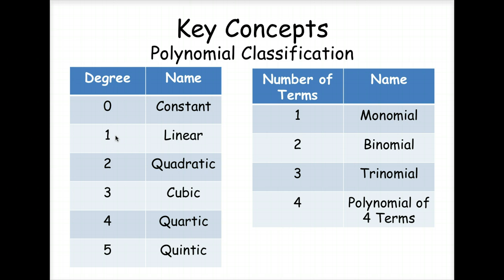If the variable has a degree of 1, it's linear. If it's 2, it's quadratic. 3, cubic. 4, quartic. And 5, quintic. Now look at the number of terms. If there's one term, it's a monomial. 2, binomial. 3, trinomial. And 4 is a polynomial of 4 terms.